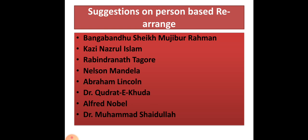I want to give you a brief idea on this particular rearrange, person-based rearrange. And I chose more than seven or eight particular famous persons. They are very much familiar and very much famous in this regard. So first of all, Bangabandhu Sheikh Mujibur Rahman, you may have his lifespan or his rearrange. Then Kazi Nazrul Islam, Rabindranath, Nelson Mandela, Abraham Lincoln, Dr. Qudrat-e-Khuda, Alfred Nobel, Dr. Muhammad Shahidullah. All are famous and you may get, if you practice more and more on them, you will, I hope you will get full marks in this particular question.